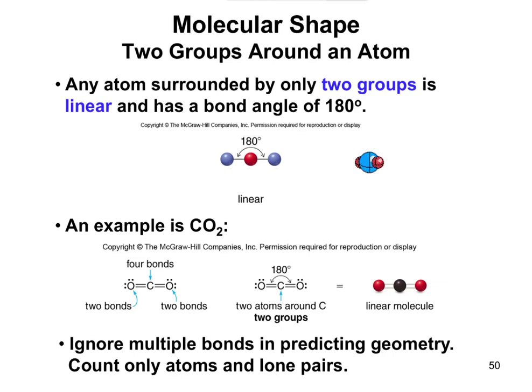In this case, the example given is CO2, carbon dioxide. If you ask what shape is around this particular carbon, the carbon is bound to one group over here, that oxygen, and another group over here, that oxygen. So that carbon is bound to two groups and no lone pairs.